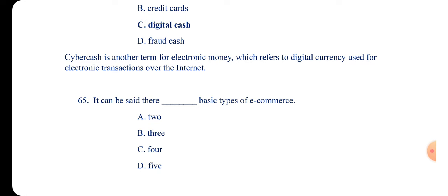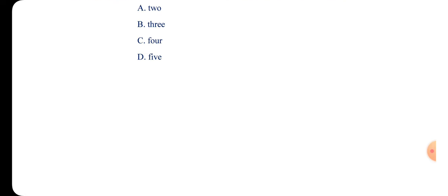Question 65: It can be said that there are how many basic types of e-commerce — two, three, four, or five? Please drop the answer in the comment section.